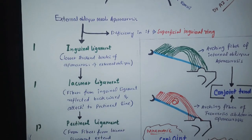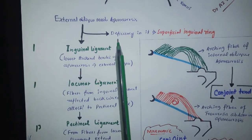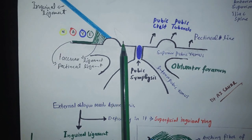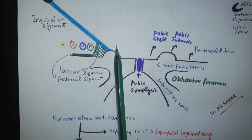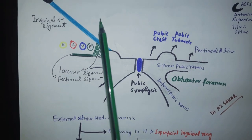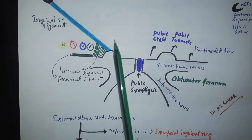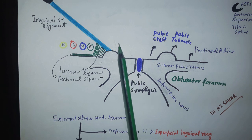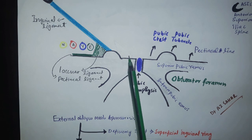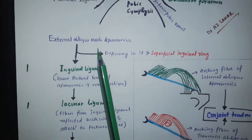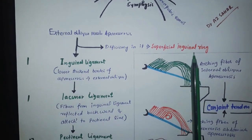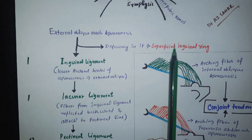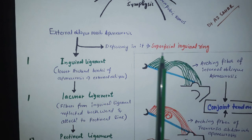Now we understand the external oblique muscle aponeurosis. There is a deficiency in the external oblique muscle aponeurosis — this whole area has aponeurosis, but this specific area is going to be deficient; there will be no external oblique aponeurosis here. So this deficient area is actually called the superficial inguinal ring. The deficiency in the external oblique muscle aponeurosis forms the superficial inguinal ring.